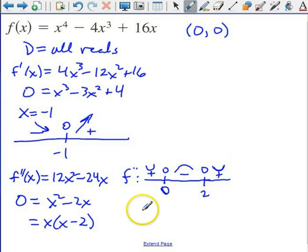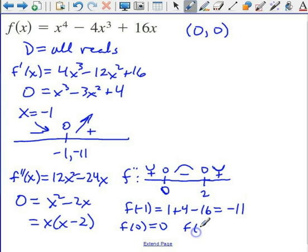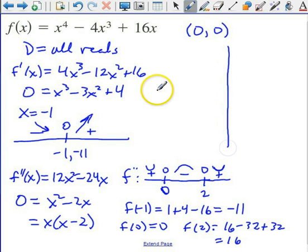Okay, so let's get some actual points. I have a critical point at negative 1. So f of negative 1 is going to be 1 plus 4 minus 16, which is negative 11. And I've got a minimum, then, at negative 1, negative 11. And how about our points of inflection? f of 0 is 0, and f of 2 is going to be 16 minus 32 plus 32, which is 16.